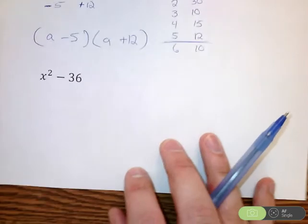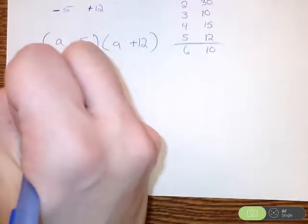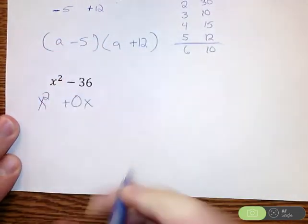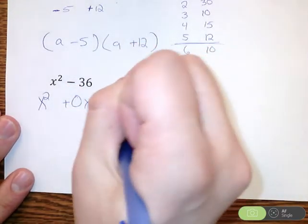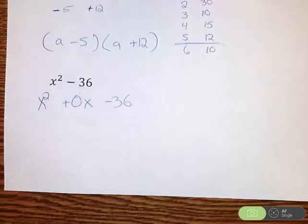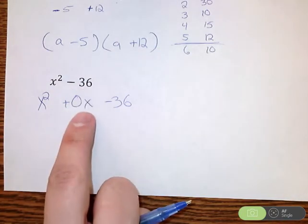Well, the middle term is there. We just don't see it. That middle term is actually just 0 because 0 times x is 0. We don't typically write 0 if it's 0. So we have that is really the setup here. Our middle term was missing, but it's really just 0x.